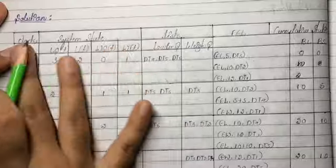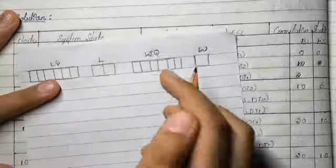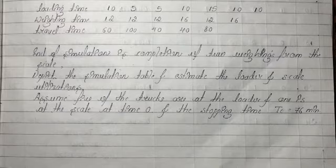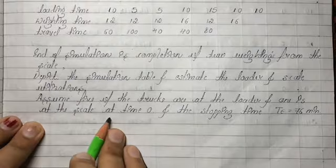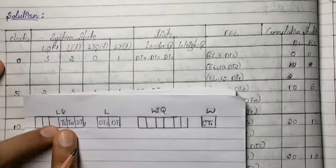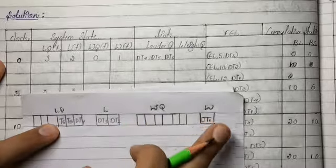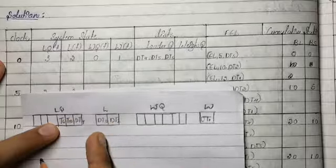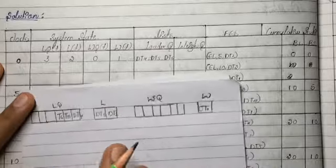We need certain columns for this problem. There is a loading queue and two loaders, a scaling queue, and only one scale. The question states: assume five of the trucks are at the loader and one is at the scale at time zero. So there are six trucks total. Since there are only two loaders, we write two trucks at loader and the other trucks at loading queue.